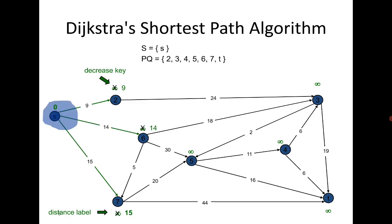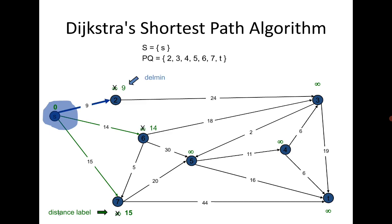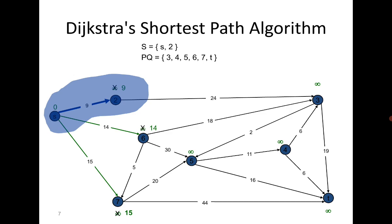Once we update 9, 14, and 15 — all others are still infinite. Among 9, 14, and 15, the minimum is 9. Therefore it is clear that from s to vertex 2, the shortest distance is 9, so we reach vertex 2.